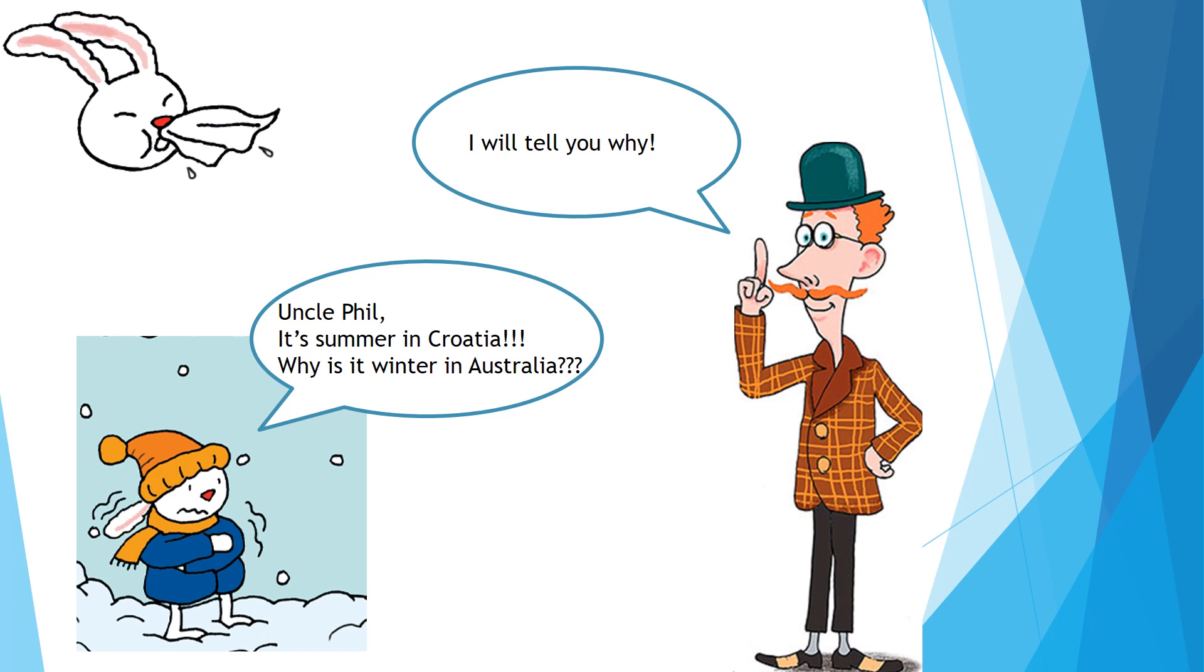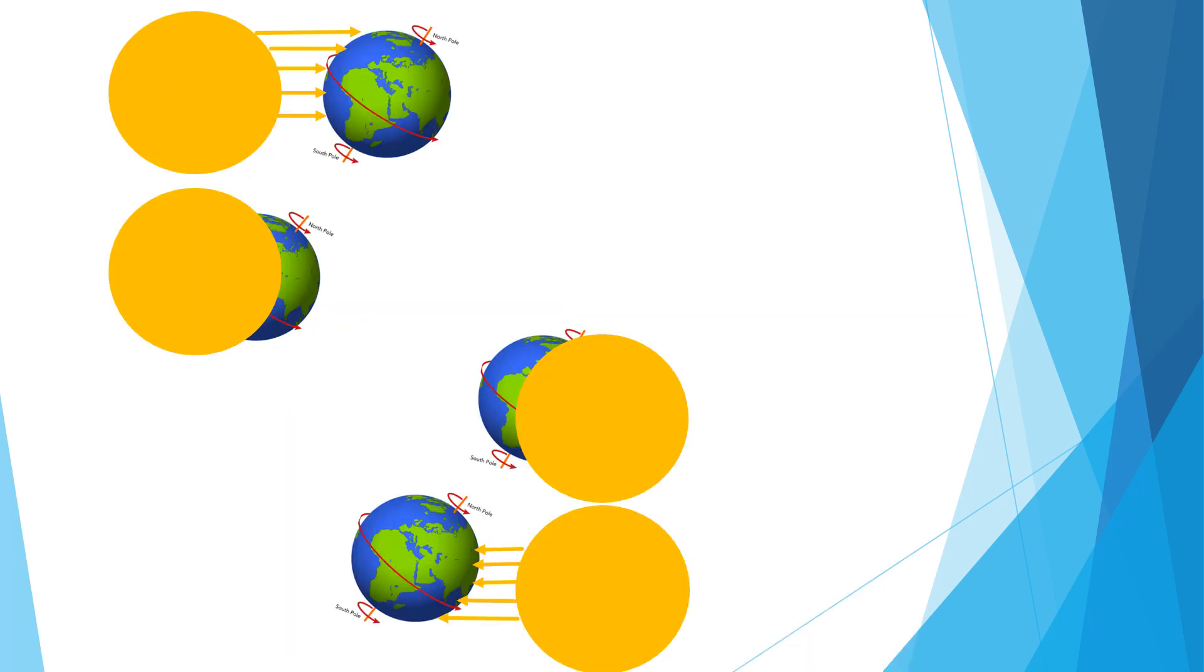I will tell you why! The Earth circles around the Sun. When the part of the planet Earth where Uncle Phil and his relatives are is closer to the Sun, the Sun shines more directly and they have summer, and the other part of the planet Earth has winter. The Earth circles the whole year around the Sun. It takes 365 days to make the whole circle. When the part of the planet Earth where we are is closer to the Sun, the Sun shines more directly where we are, so we have summer and the other part of the planet where Uncle Phil and his relatives are in Australia have winter.